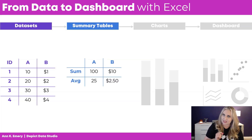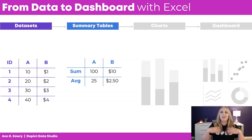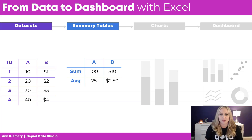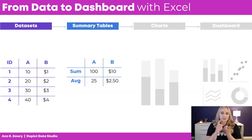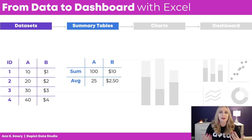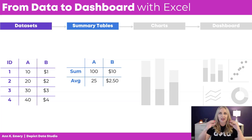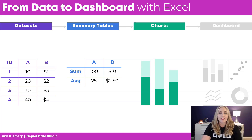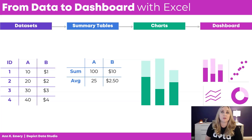You probably know what summary tables look like. We're going to talk a lot about tables in this course — all sorts of different tables — so I want to get you used to the lingo early on so we're all using the same vocabulary. Summary tables are a tabulation or a summary: you might do a sum, an average, or a count. You're taking your whole data set and crunching it down, tabulating it, summarizing it. Those summary tables feed into our charts, and then those individual charts work together to form a cohesive dashboard.